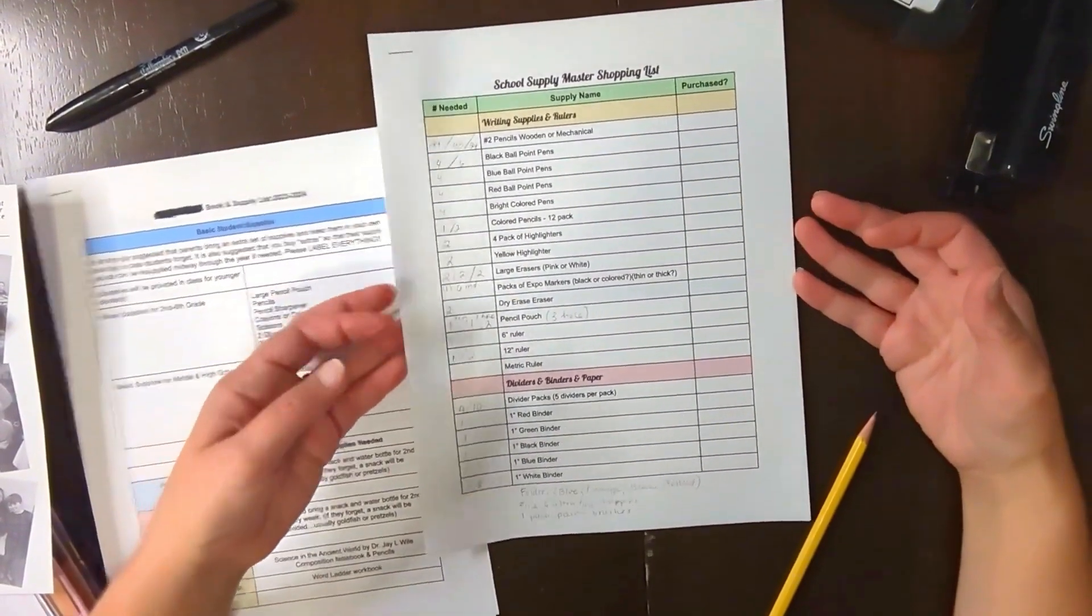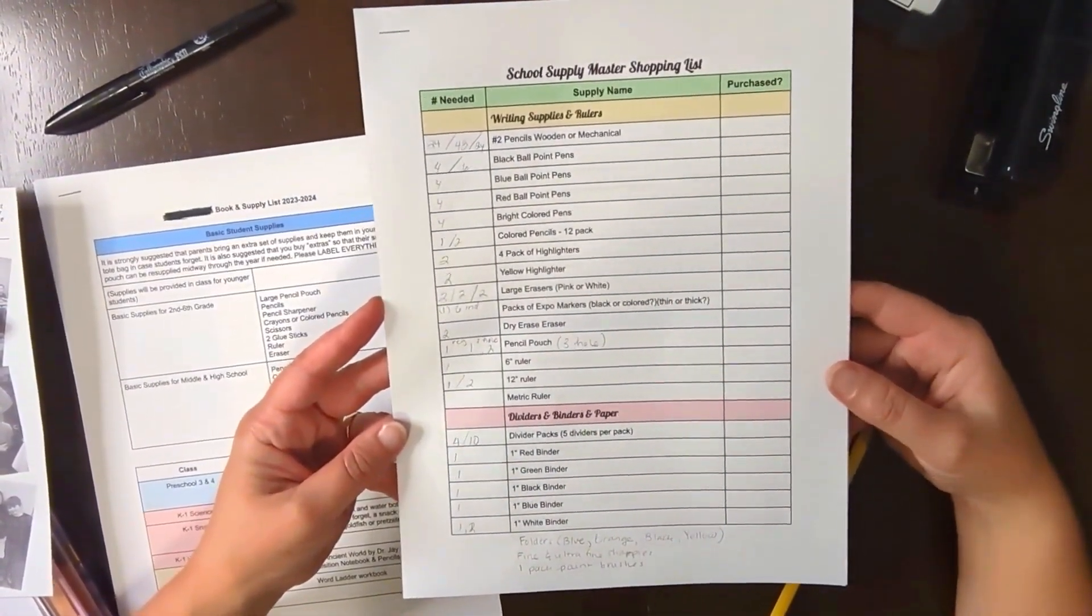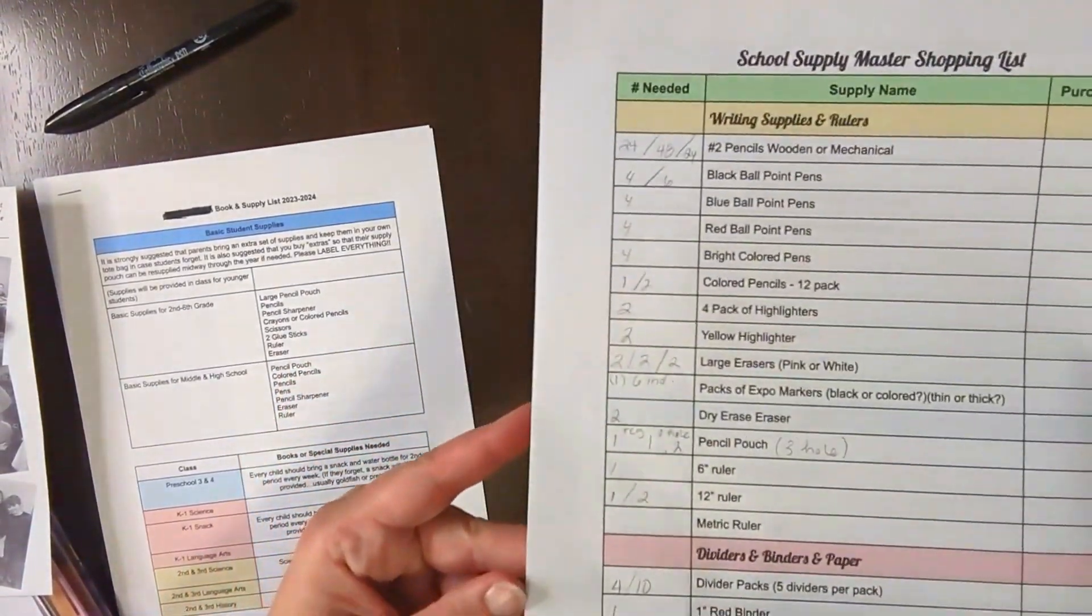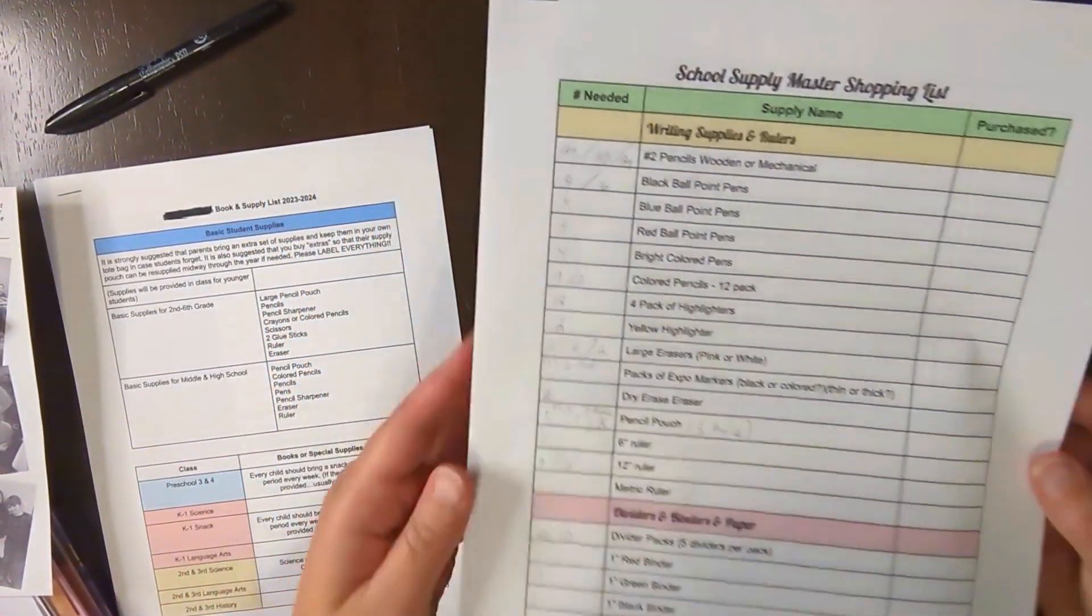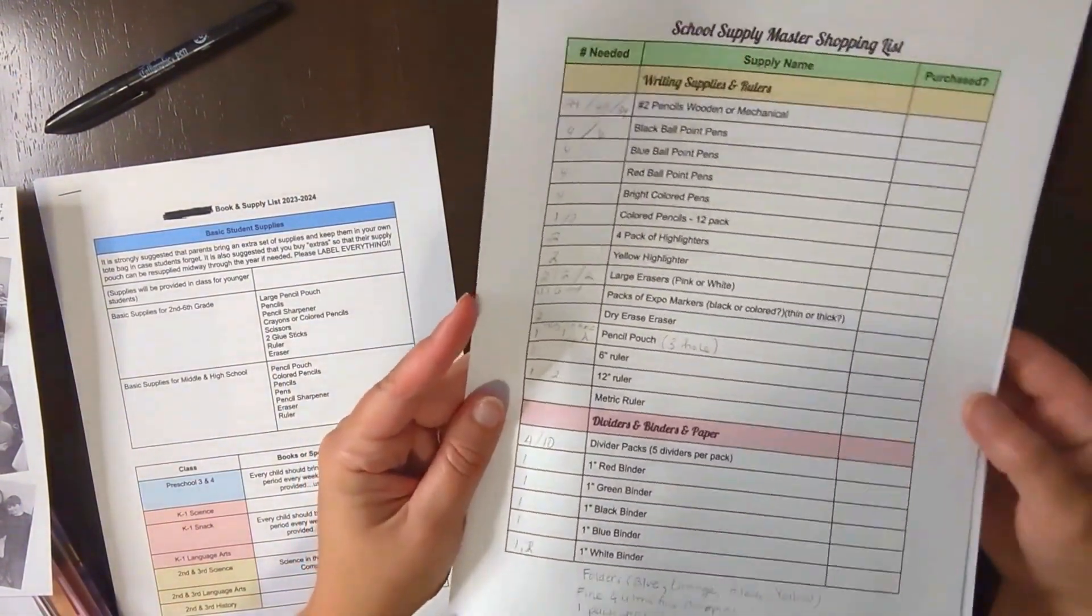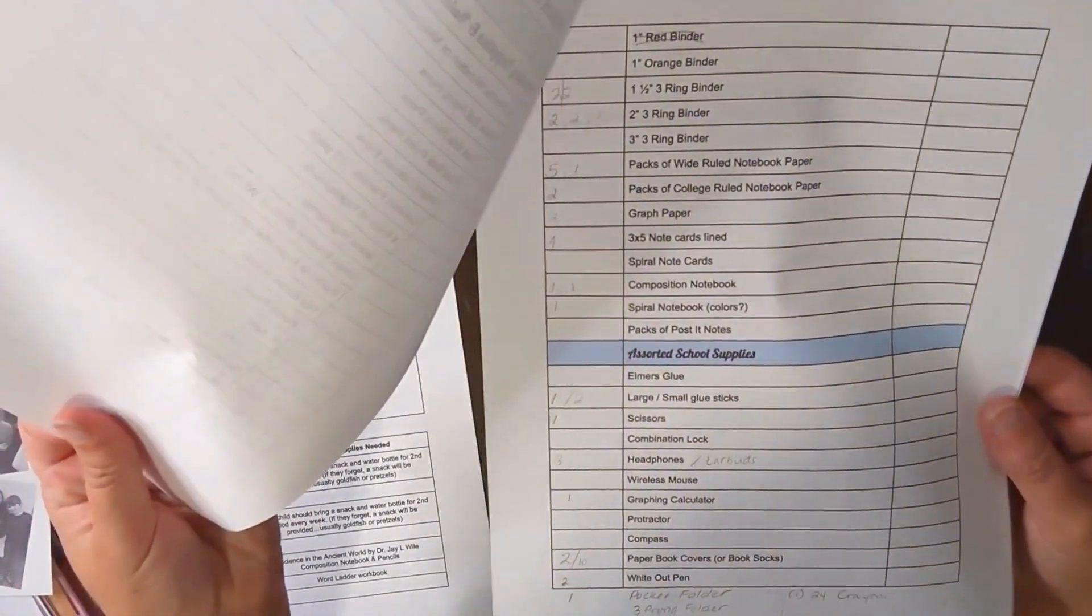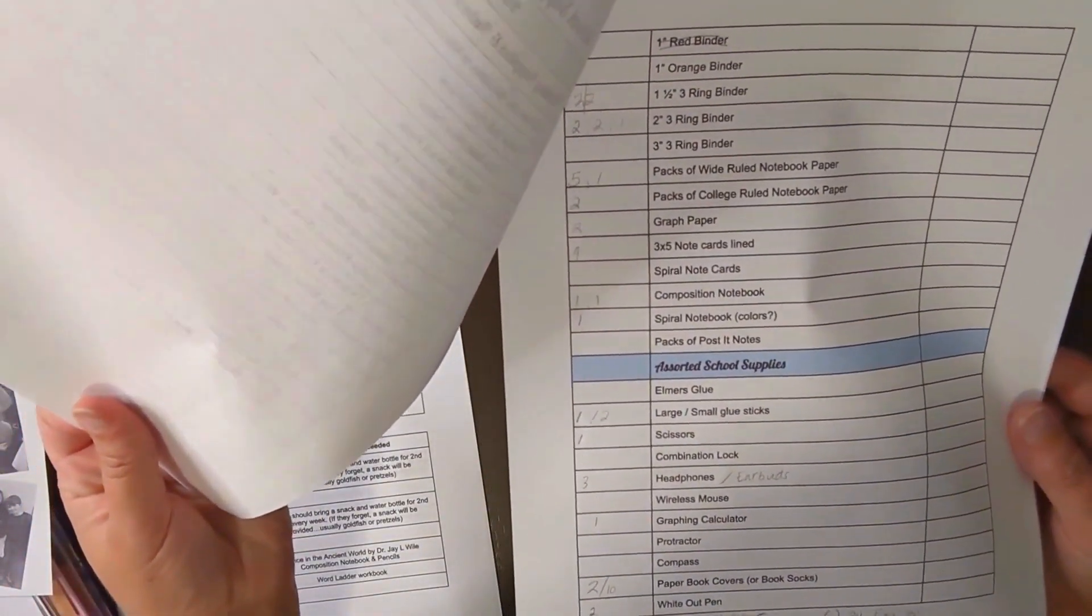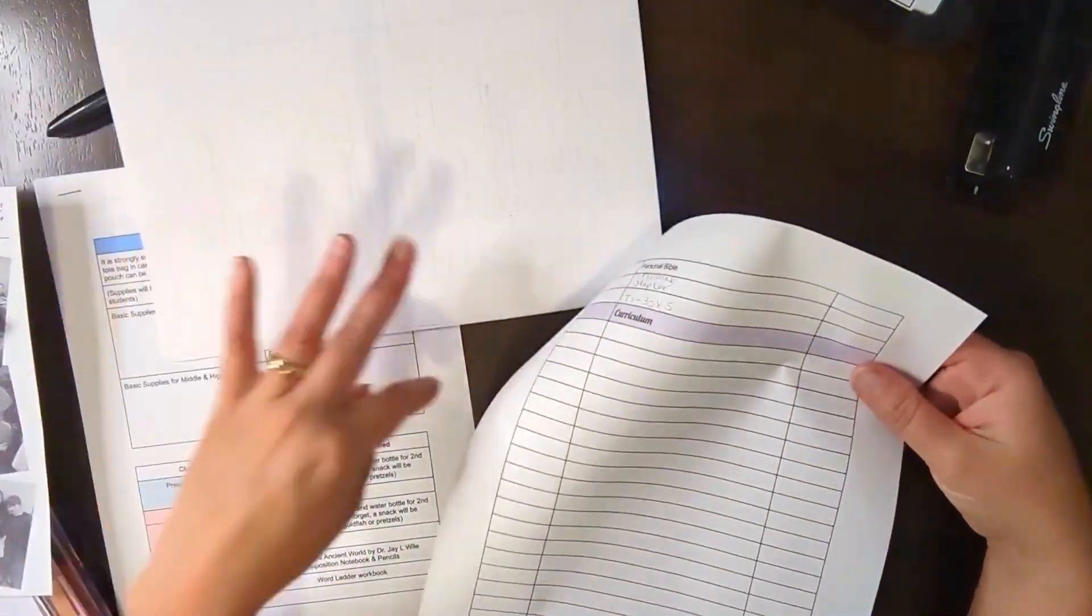And then after I do the school supplies, I'm going to come back to it and do the curriculum. So I have finished filling in all the school supplies. It's probably hard to see, but I've got this column of needed all filled in. And I also realized that there were some categories I had missed. So I'm going to go back and add those to this document. But now I'm going to work on the curriculum.